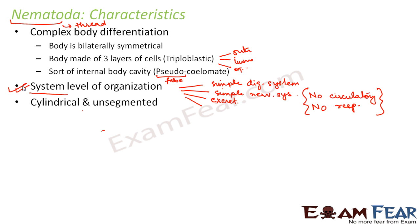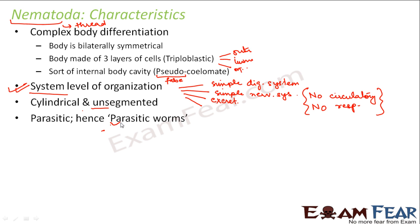The shape of nematodes is generally cylindrical and unsegmented. Unsegmented means their body is not divided into equal parts known as segments — it is a plain cylindrical structure. It almost gives the appearance of a thread, and that is why they are called nematodes — because the word nematode means thread. They are parasitic, and therefore often known as parasitic worms. They stay inside the body of other living organisms and cause disease in those organisms.